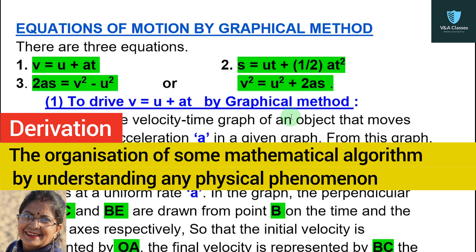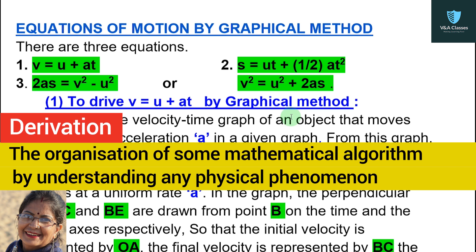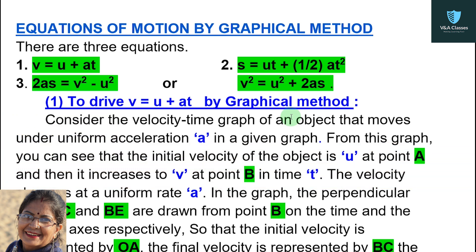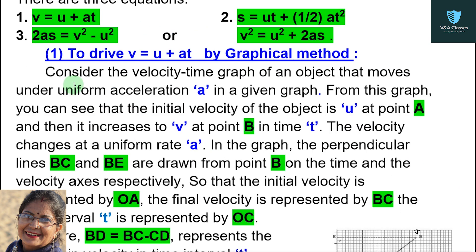So first question is: what is derivation? Derivation defines the organization of some mathematical algorithm by understanding any physical phenomena. In Hindi, if you know about an event, then converting that event into a mathematical formula step by step — so that whatever sums are related to that particular event, you can solve them — that is derivation.